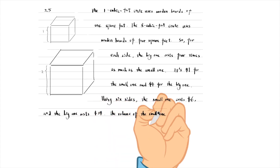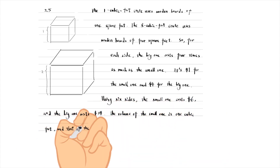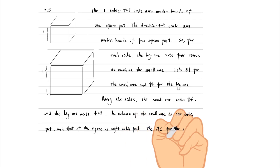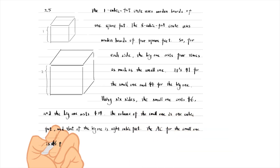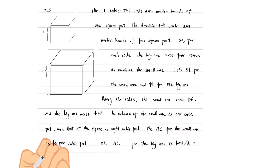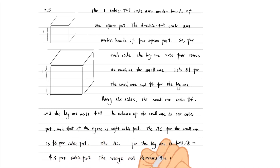Using 6 sides, the small box costs $6 and the big box costs $24. The volume of the small one is 1 cubic foot and that of the big one is 8 cubic feet. The average cost for the small one is $6 per cubic foot, and for the big one is 24 divided by 8 equals $3 per cubic foot. The average cost decreases as volume increases.